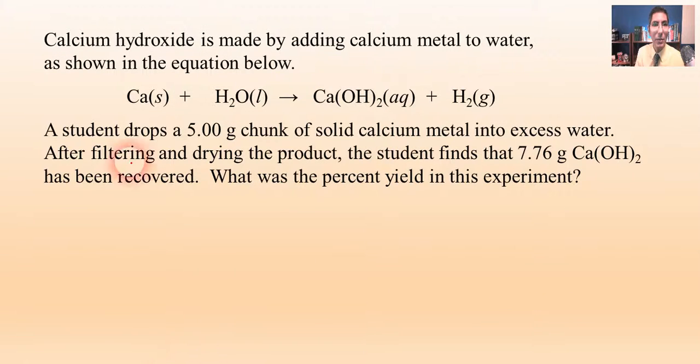Now, here's another possibility. Let's say we have some calcium hydroxide produced here. We're going to take some calcium, drop it in water, and make some calcium hydroxide along with hydrogen. And let's say a student drops a 5 gram chunk of solid calcium into some water. After filtering and drying the product, the student finds that 7.76 grams of Ca(OH)2 has been recovered. What was the percent yield? Well, notice that we're given the actual yield, aren't we? We're told that the student actually gets from the laboratory 7.76 grams of calcium hydroxide. But does the problem tell us what the theoretical yield is of the calcium hydroxide? It doesn't, does it?